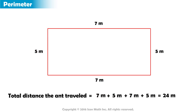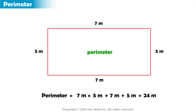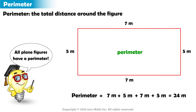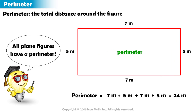The total distance around the rectangle is called its perimeter. It is the total distance around a figure. Any plane figure will have a perimeter, not just rectangles.